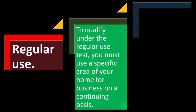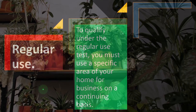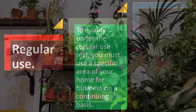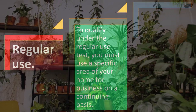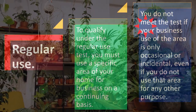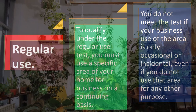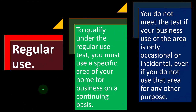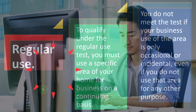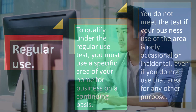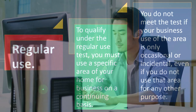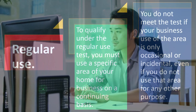Next is the regular use test. To qualify, you must use a specific area in your home for business on a continuing basis. You do not meet the test if your business use of the area is only occasional or incidental, even if you don't use that area for any other purpose. For example, if you have a large home and only used a room once to write something, that wouldn't qualify as regular use.